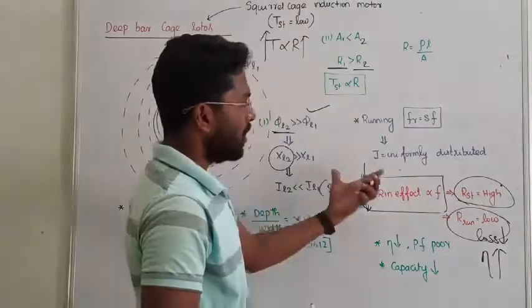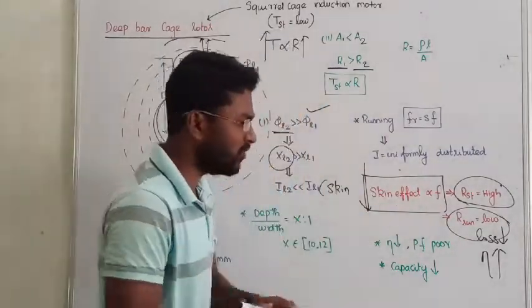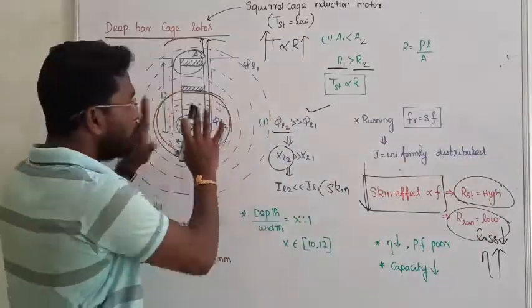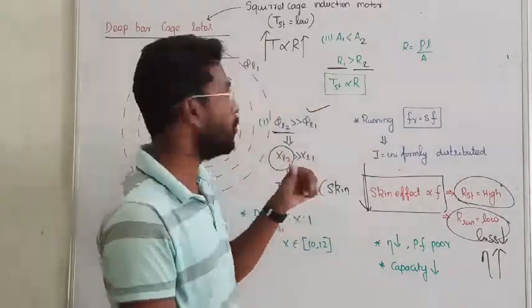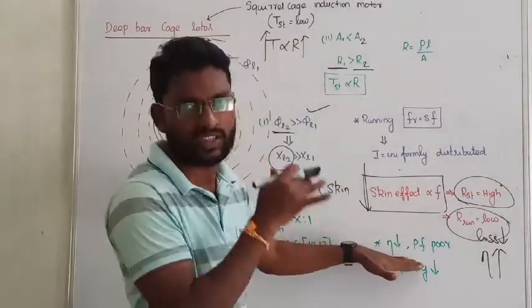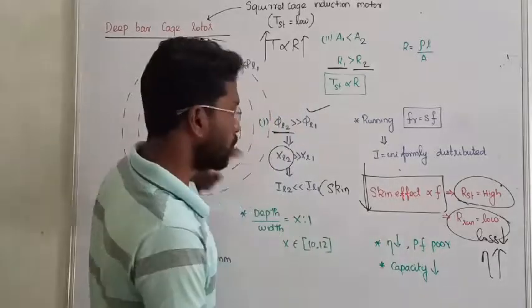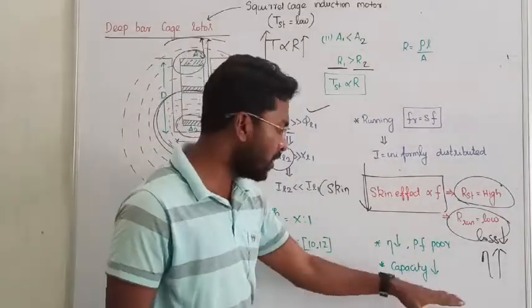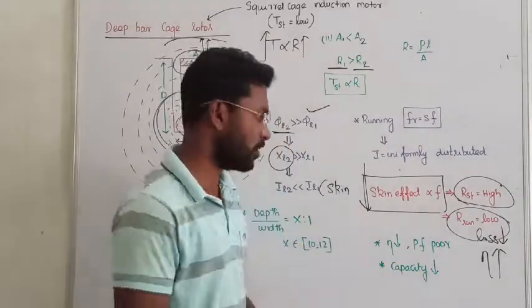But if we compare deep bar construction with normal machine without deep bar, efficiency is less, power factor is poor. Capacity of the machine due to this deep bar is reduced. These are the few drawbacks of the deep bar cage.